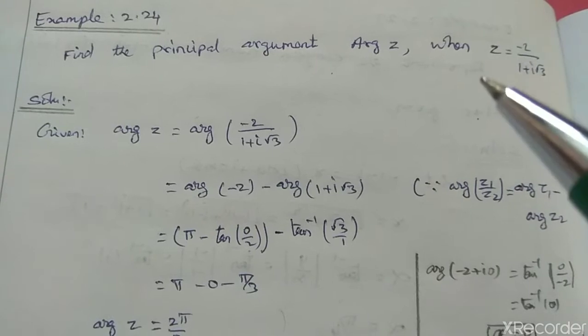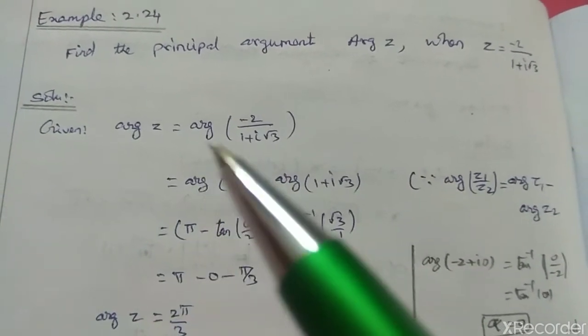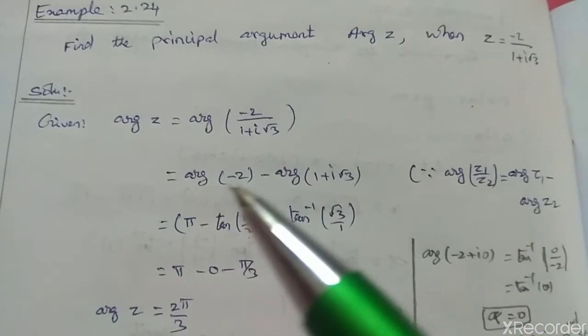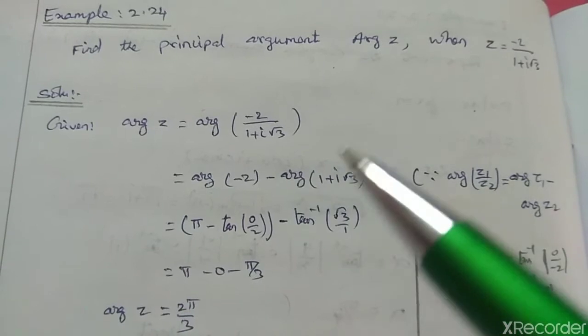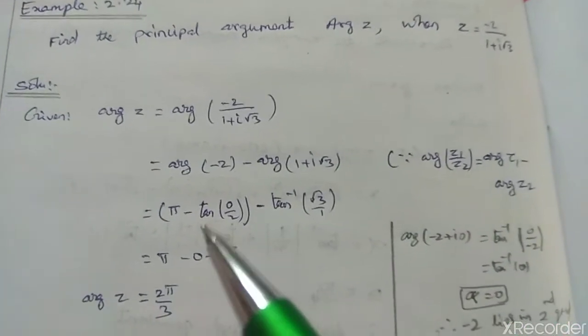Taking argument on both sides. Argument of z1 divided by z2 equals Argument of z1 minus argument of z2. Using this property.